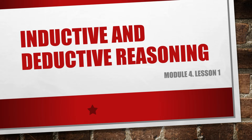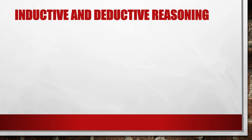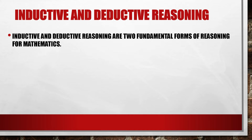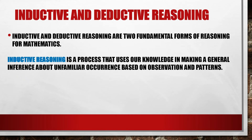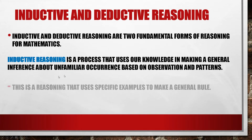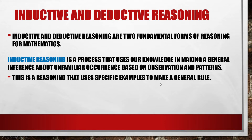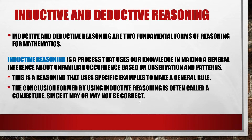Our lesson is all about inductive and deductive reasoning, taken from Module 4, Lesson 1. Inductive and deductive reasoning are two fundamental forms of reasoning in mathematics. Inductive reasoning is a process that uses our knowledge to make a general inference about unfamiliar occurrences based on observation and patterns. This reasoning uses specific examples to make a general rule. The conclusion formed by using inductive reasoning is often called a conjecture, since it may or may not be correct.